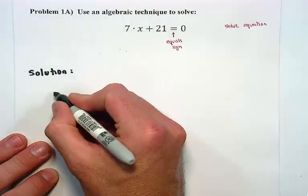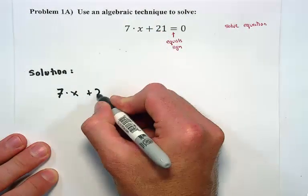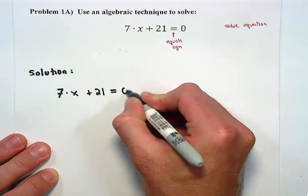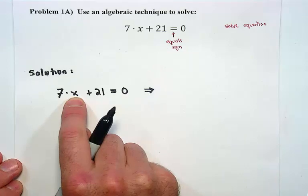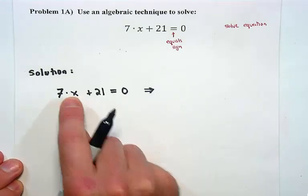We begin our solution by writing the entire original equation in our own handwriting first. We want to isolate the variable using inverse operations. We're going to get the x by itself.